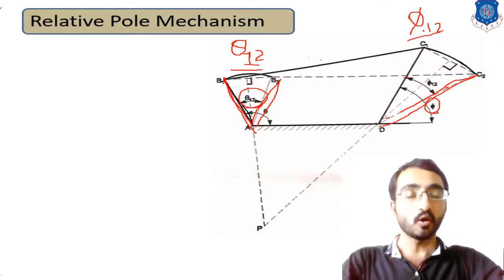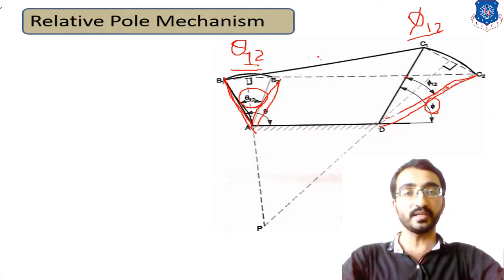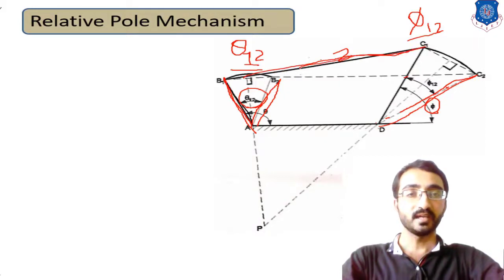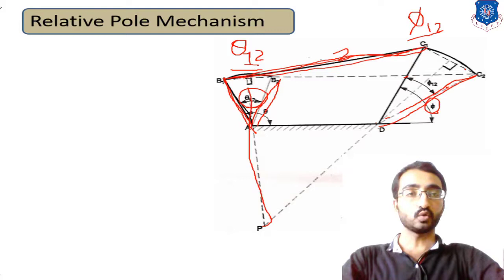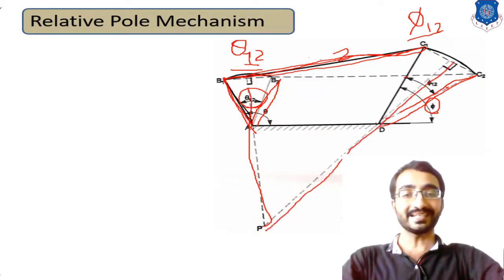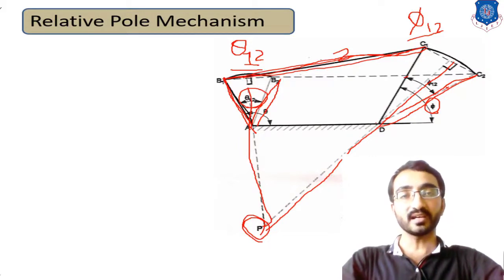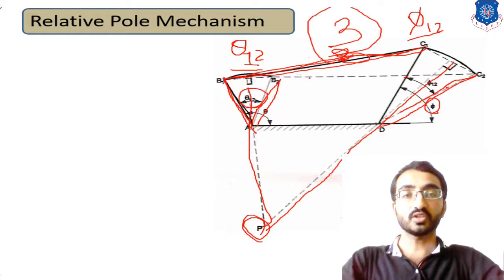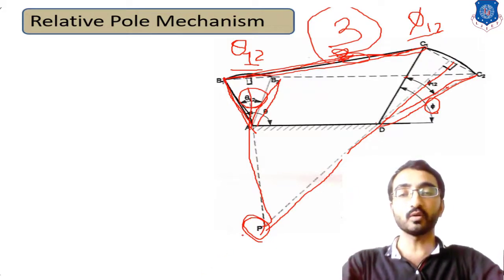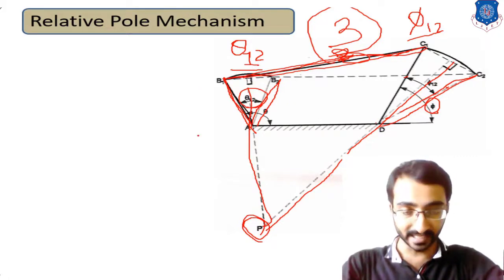So theta-12 defines the input link angle motion from position 1 to 2, and phi-12 defines the output link motion from angle 1 to 2. To find the fixed point about which link B1-C1 rotates — to identify the center point for this link's rotation — we take the perpendicular bisector of B1 to B2 and the perpendicular bisector of C1 to C2. Their intersection gives us point P, about which link number 3 rotates. This P is known as the relative pole.